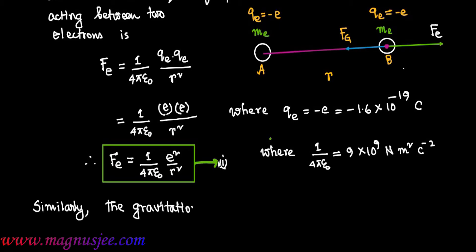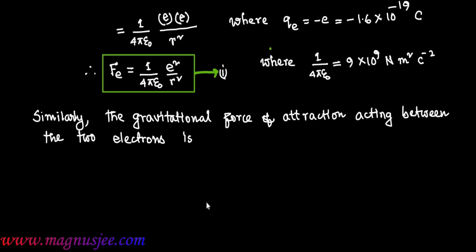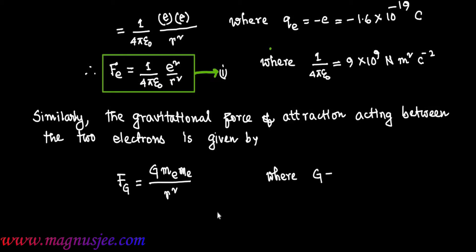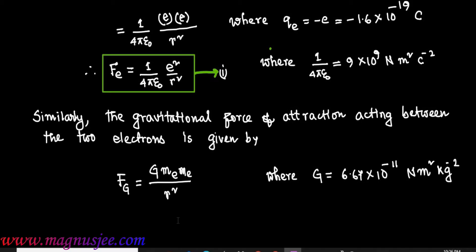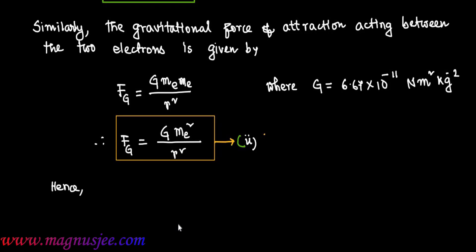Similarly, the gravitational force of attraction acting between the two electrons is given by Fg = G · Me · Me / R², where Me is the mass of one electron and G is the gravitational constant, which has the value 6.67 × 10⁻¹¹ Newton meter squared kg to the power minus 2. Therefore, Fg = G · Me² / R², which is equation 2.